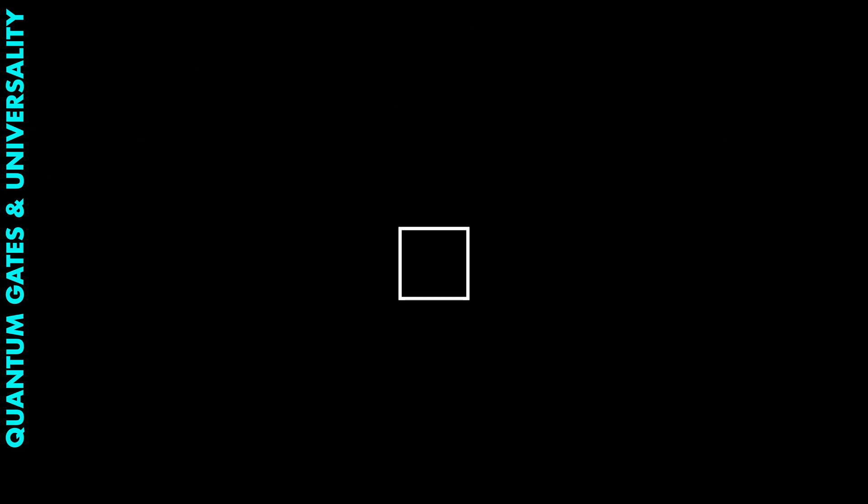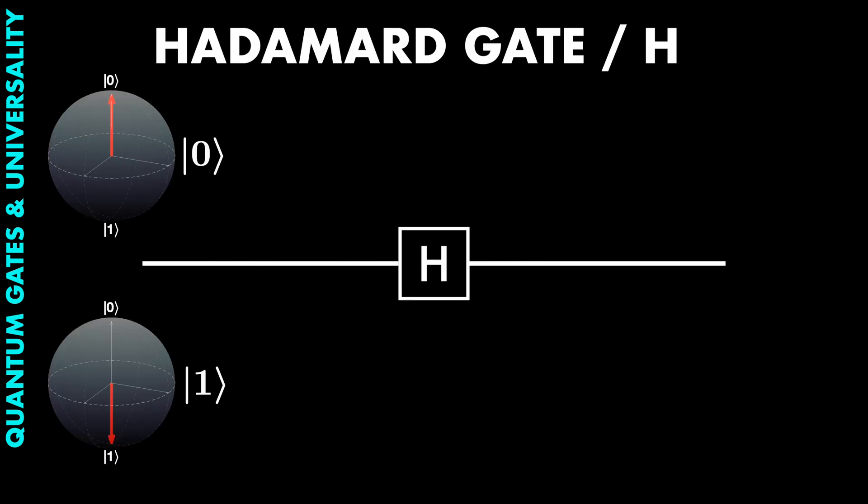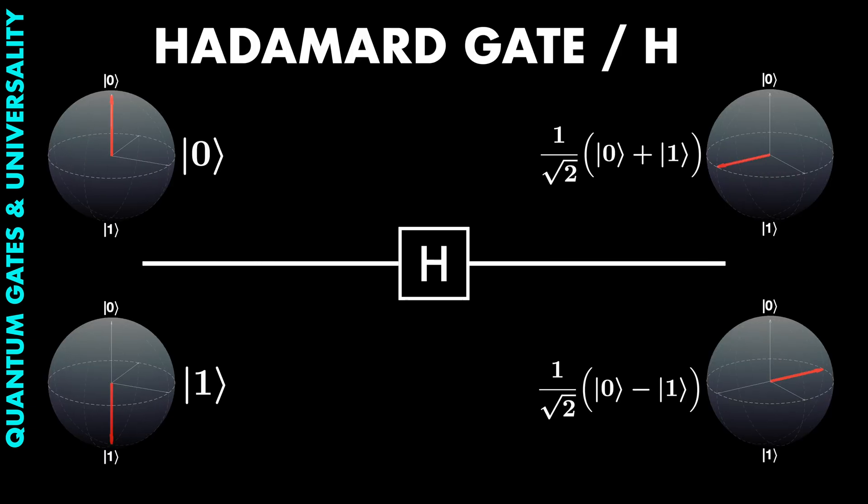One significant example is the Hadamard gate. It changes each qubit to a 50-50 mix of both states, just with a different phase. And single qubit gates are pretty straightforward, so let's move on to two qubit gates.